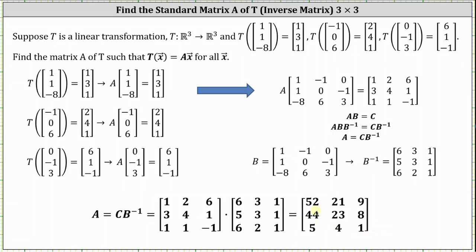This is the standard matrix or transformation matrix for the given transformation from R3 to R3. And this is the same matrix that we found when we found the transformations of the standard basis vectors, or the vectors e sub one through e sub three, in the previous lesson. I hope you found this helpful.